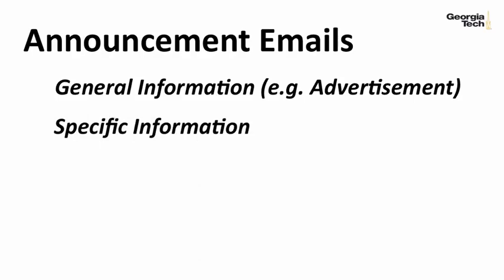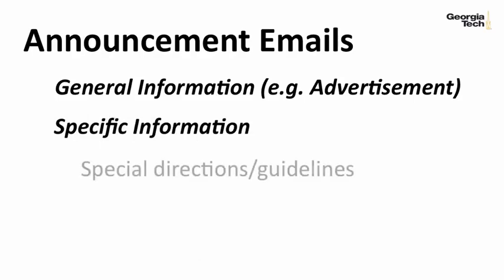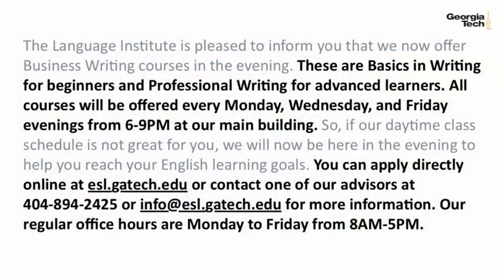Now, there are two types of announcement emails. One can have more general information, like the example we just looked at, but in some cases the email will need to have more specific information. These emails are especially helpful when you need to give special directions or guidelines for the event. This is one place where you want to pay particular attention to the order of the information in your email. Your email should include who, what, when, where, why, and other details. Let's look at the same announcement again but with more detailed information. It should be clear that I followed the order of information in the email for the readers: who, what, when, where, why, and other details. For all these types of emails, you want to finish on a positive note with words of appreciation and a simple closing. Add your signature and you're done.